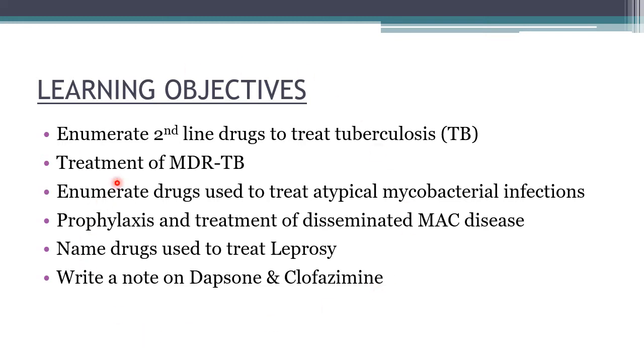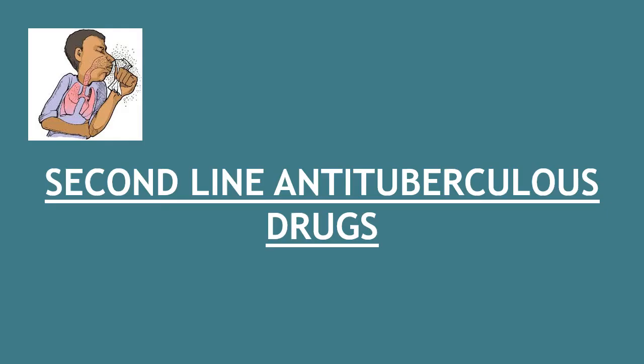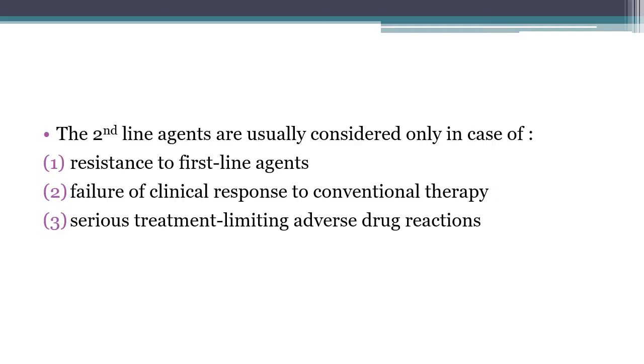Before starting the second-line anti-tuberculous drugs, let's revise the first-line drugs: isoniazid, rifampin, ethambutol, pyrazinamide, and streptomycin. In some books streptomycin is listed as first-line, in others as second-line; the four drugs used in standard treatment regimens are isoniazid, rifampin, ethambutol, and pyrazinamide. Streptomycin is usually given if the patient cannot tolerate any of those four. Second-line agents are considered only if there is resistance to first-line agents.